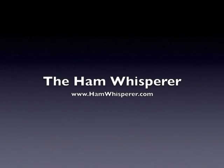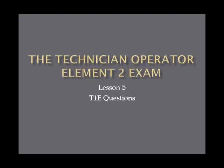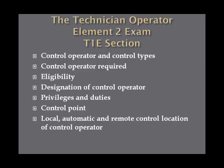Hi, this is Andy, KE4GKP, and welcome back to the Ham Whisperer and Lesson 5 in the Technician Operator Element 2 Exam Preparation. For this lesson, we're going to cover the T1E section from the Question Pool, which includes Control Operator and Control Types, Control Operator Requirements, Eligibility, Designation of Control Operators, Privileges and Duties, Control Points, Local, Automatic and Remote Control, and Location of Control Operators.